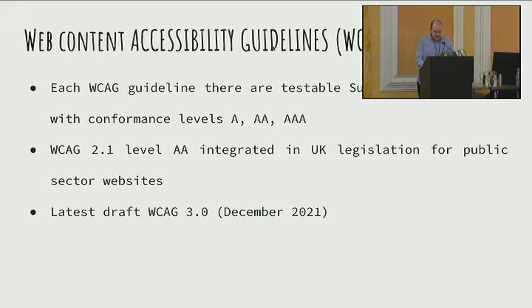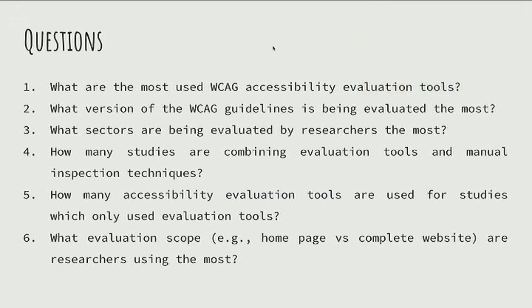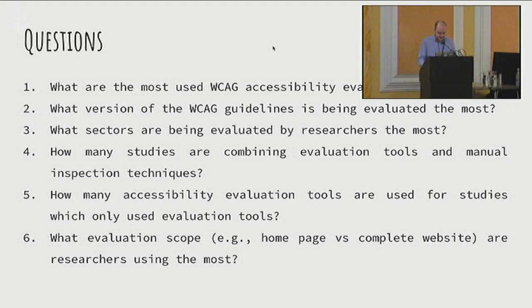This got me thinking, and these are some of the questions I was posing to myself on why we should be testing for web accessibility. Web accessibility is a very timely, expensive operation — it takes a lot of time and resources. So people tend to use automated evaluators to test their websites. I had questions about what evaluators people are using, what versions of WCAG they're testing against, and what sectors people are focusing on when running these tools.